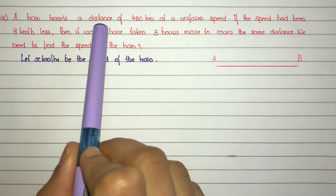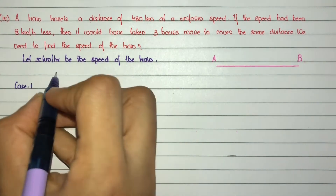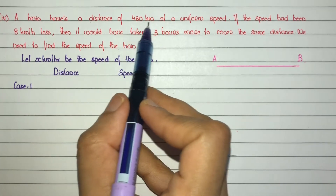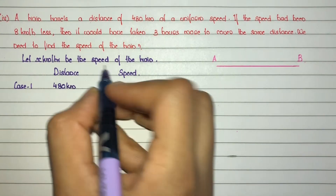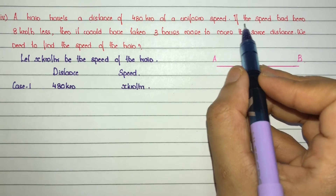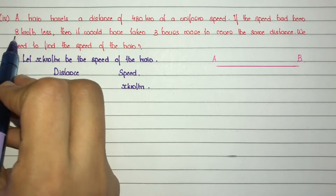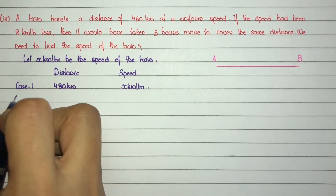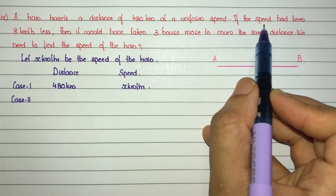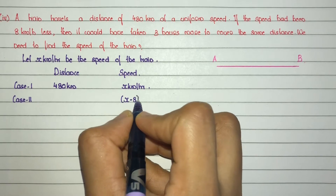A train travels a distance of 480 km at a uniform speed. Case 1: distance is 480 km, speed is x km per hour. If the speed had been 8 km per hour less — that is Case 2 — the speed would be x minus 8 km per hour.